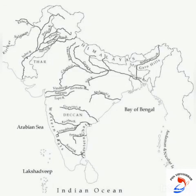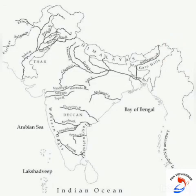Now mark Garo hills. Garo hills are on the east side of India. Can you find it? Now mark Garo hills. Now mark the Vindhyas. The Vindhyas are in the center of India — in central India, above river Narmada. Mark Vindhyas in its place.